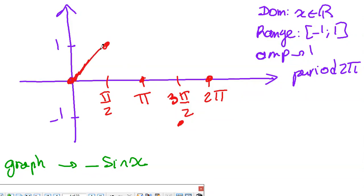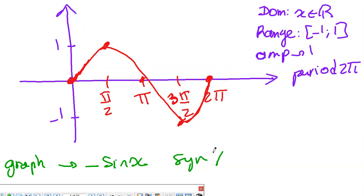The sine function starts from the origin at (0,0), goes up, then down, then up again. The amplitude is 1, the period is 2π, the domain belongs to all reals, and the range is between -1 and 1. To graph minus sine x using the graph of sine x, it's exactly the same process — do the symmetry with respect to the x-axis. Points on the x-axis stay, the others reflect.